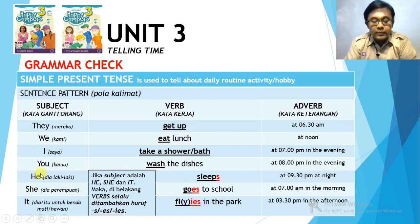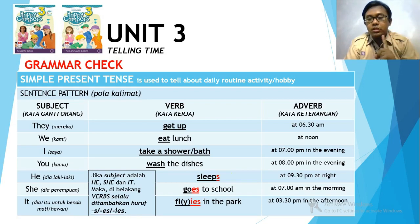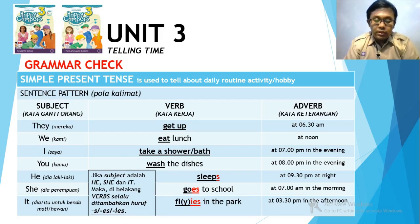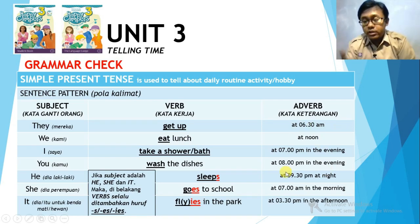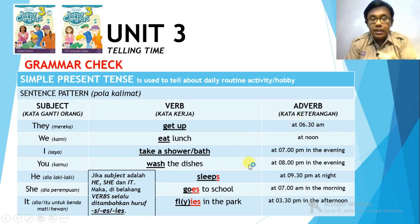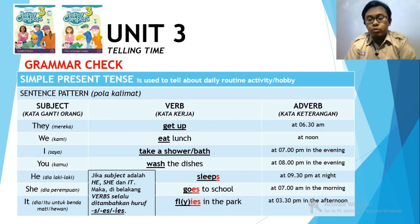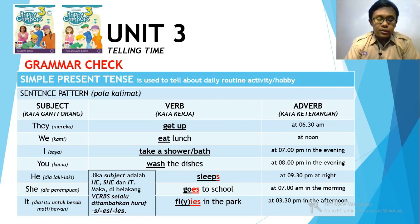So to summarize: for subjects they, we, I, you — the verb is normal, no added letters. For he, she, it — add -s, -es, or -ies to the verb. Please save this sentence pattern because it will come out in every quiz or semester exam. Okay, now let's go back to our Happy Campers book.